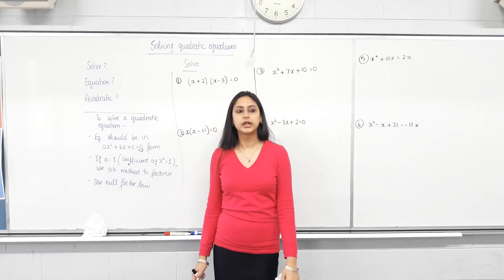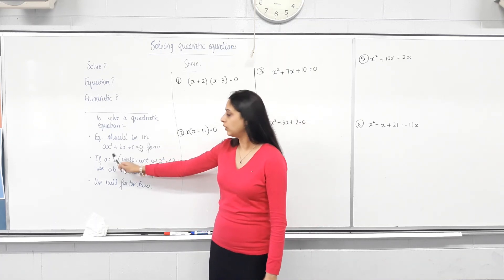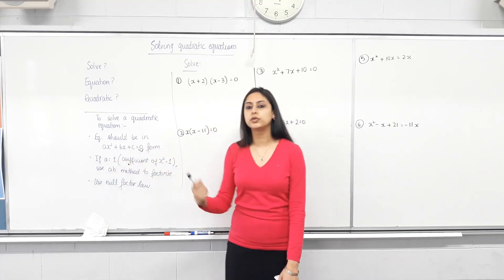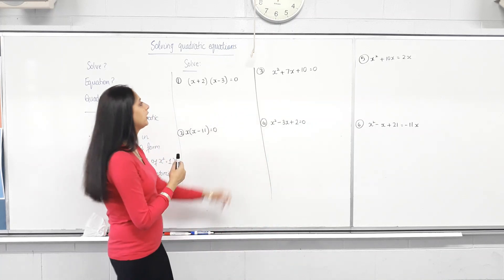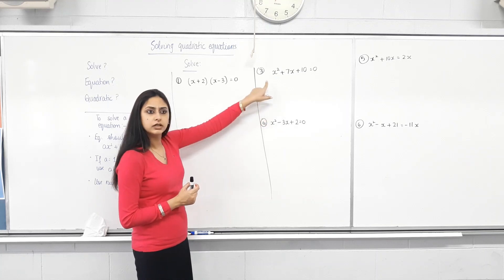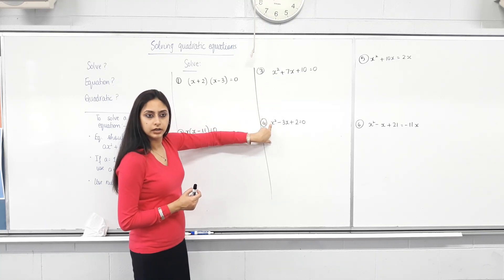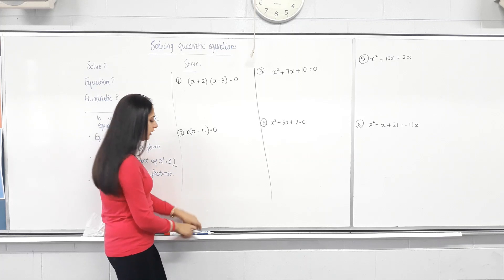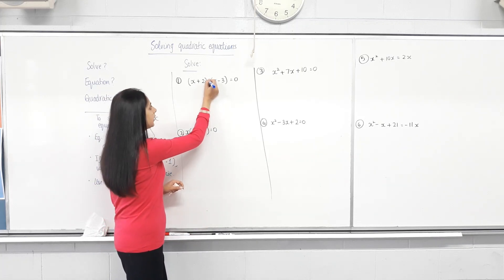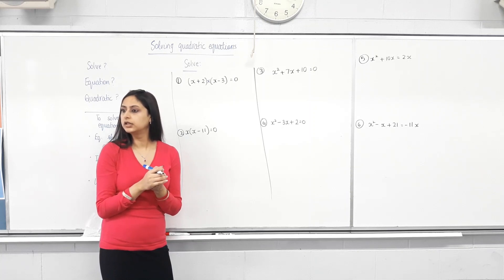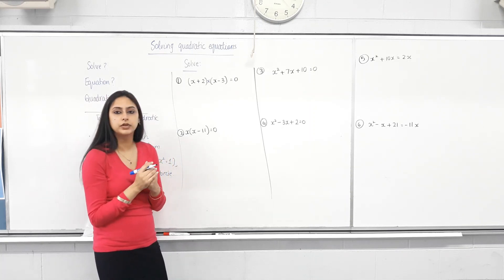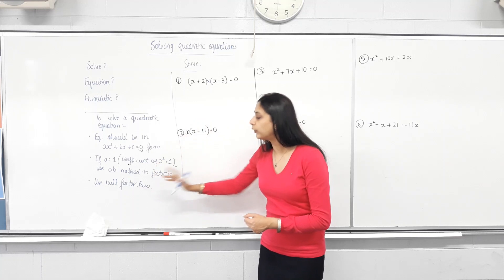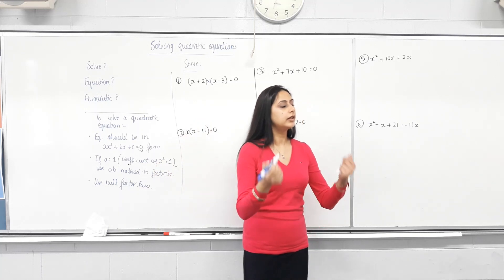And then move on to step 2. If the coefficient of x squared is 1, we use the A-B method to factorize. We have done this before, but I'll give you a quick recap. Is the coefficient of x squared 1? Yes. So we can factorize using the A-B method. These two — aren't they already factorized? Can you see we have one bracket times the other equal to 0? So they're already factorized. Now move on to the third step: using null factor law. And that's what I'm going to teach you today.